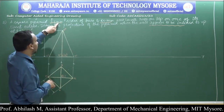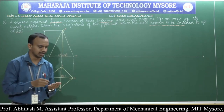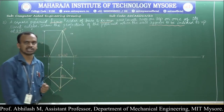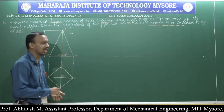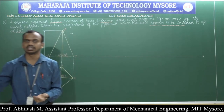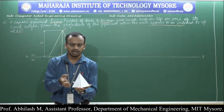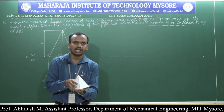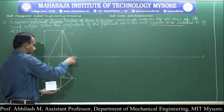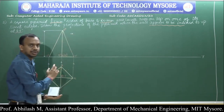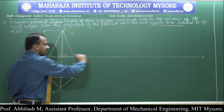The first position had a square pyramid of 35 millimeter sides and 60 millimeter axis resting on HP. Now for the second position, they specify resting on HP on one of its slant edges — one slant edge is completely resting on HP. We need to transfer the entire front view onto HP ensuring that one of the slant edges — either O dash to A dash or O dash to C dash — is resting on the HP.